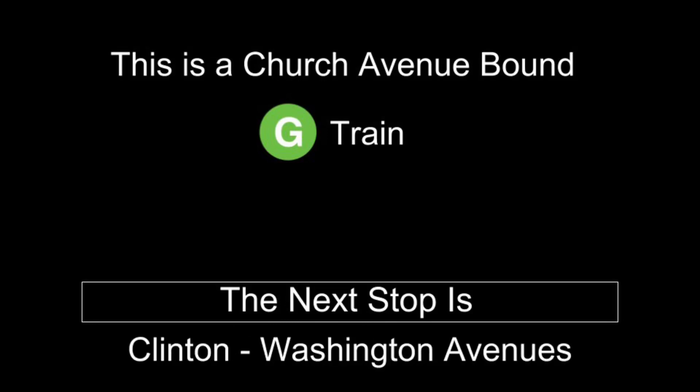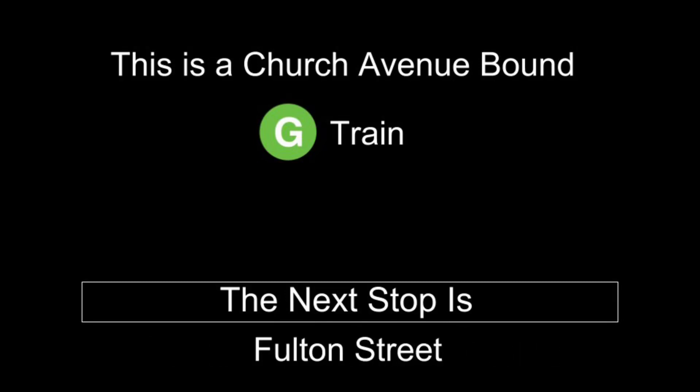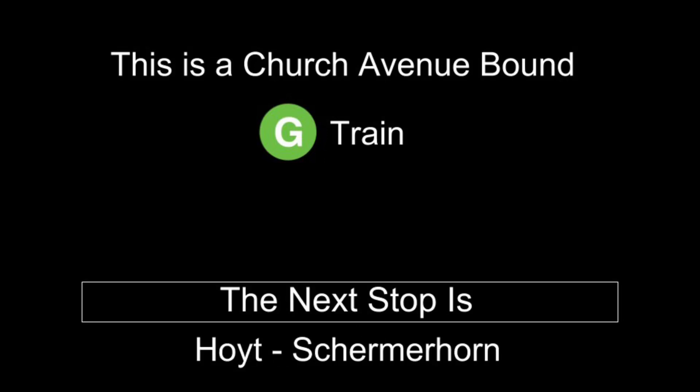This is a Church-Avenue-bound G Train. The next stop is Clinton-Washington Avenues. This is a Church-Avenue-bound G Train. The next stop is Fulton Street. This is a Church-Avenue-bound G Train. The next stop is Hoyt-Schermerhorn.